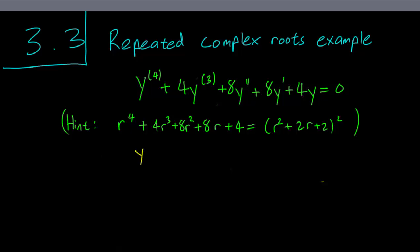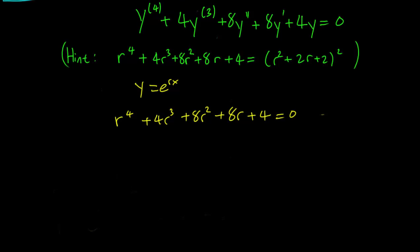First we make the usual substitution and obtain the characteristic polynomial r⁴ + 4r³ + 8r² + 8r + 4, which is coincidentally the exact same polynomial given in the hint. Let's use that.